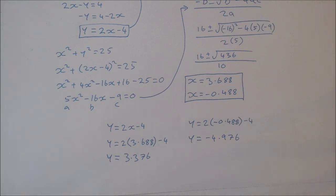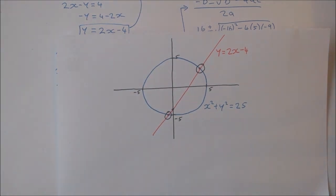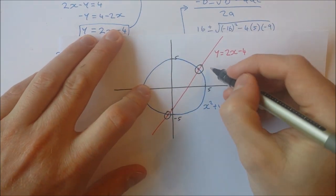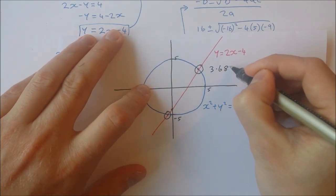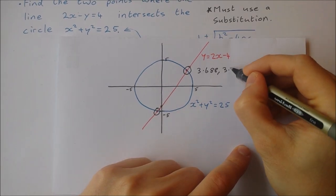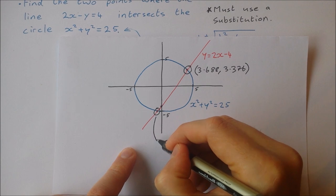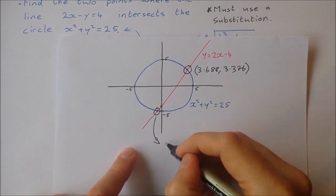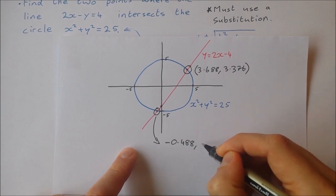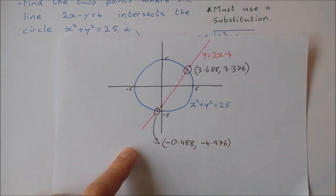So my two points of intersection, if I bring back my diagram here, my two points of intersection are 3.688 comma 3.376, that's that point there. And the point down here is minus 0.488 comma minus 4.976.